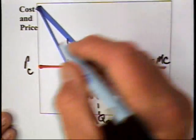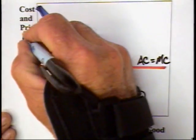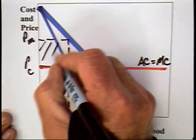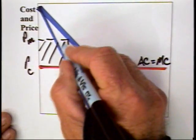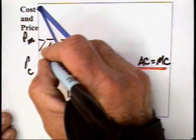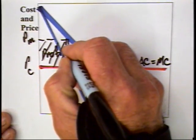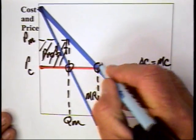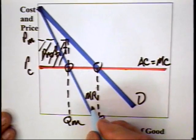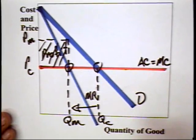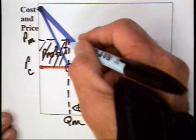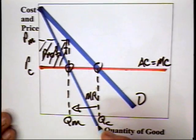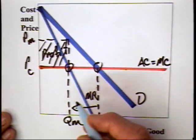And the monopoly will sell that quantity for a price of PM. And as a result, the monopoly will get a profit box equal to this area here. Now, if the market is organized competitively, you can understand why the producers might want to get together and restrict output, because if they do, then they can raise the price and they can all divide up the monopoly profits.